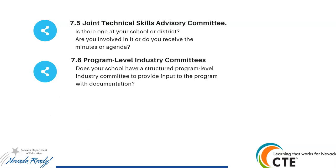I'm not going to go over 7.1 through 7.4 — those are district level, and if the districts have them, they have them. Indicator 7.5 would be a joint technical skills advisory committee — if at your school or district you have a committee that includes maybe a college or industry people who get involved with your school, help advise on how your programs should go, and help with business and industry connections. Minutes and agendas are great pieces of evidence for these items. If your district has you meet together at the program level, a minutes or agenda would be appropriate for both.